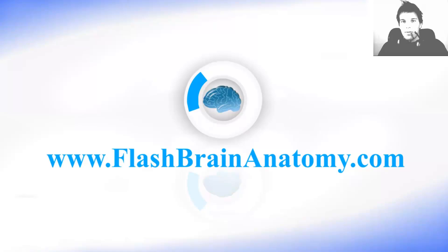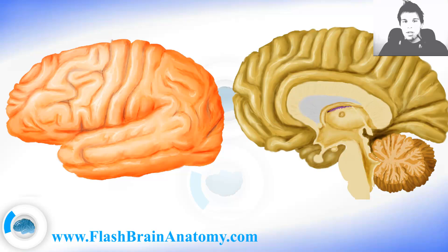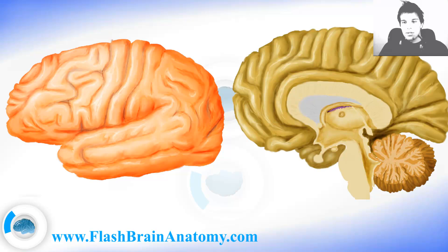Hello guys, these lessons are part of my software called the Flash Brain Anatomy. You can check it out and purchase it at flashbrainanatomy.com. In this lesson I will talk about the areas of the cortex. There are 52 areas according to Brodmann's map of the brain cortex, however we will just go through some areas that have great functional significance.